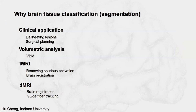Why do we care about brain tissue classification or segmentation? First of all, there are clinical applications such as delineating lesions or surgical planning. Brain segmentation is also critical for volumetric analysis. In functional MRI, brain segmentation can help with brain registration and removing spurious activation. In diffusion MRI, segmentation can also help brain registration and, in addition, it's very useful to guide fiber tracking.